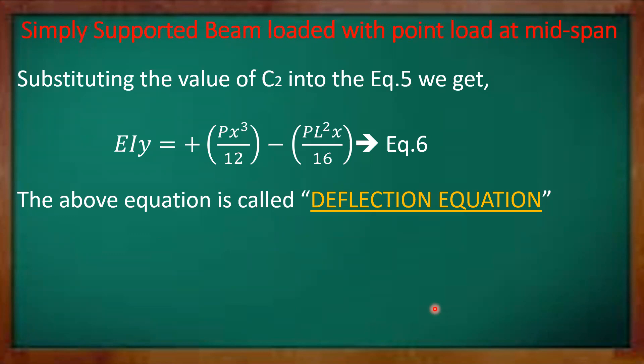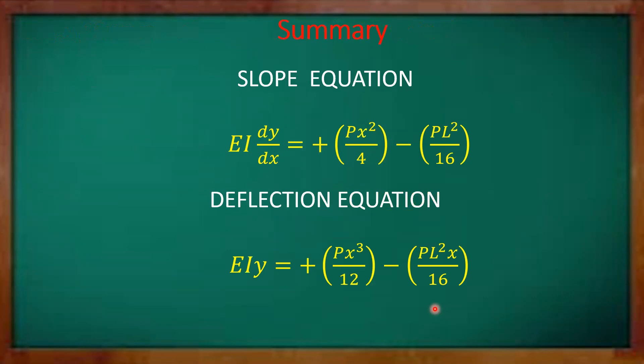In summary, the slope equation is EI dy/dx equals Px²/4 minus PL²/16, and the deflection equation is EI y equals Px³/12 minus PL²x/16. Once we know these slope and deflection equations, we can find their values at any location of the beam by substituting the corresponding x value into the required equation. Thank you all.